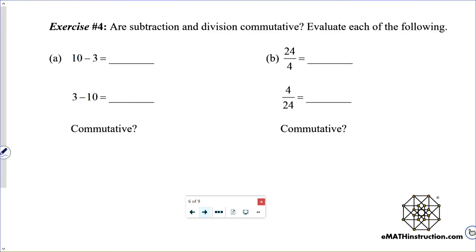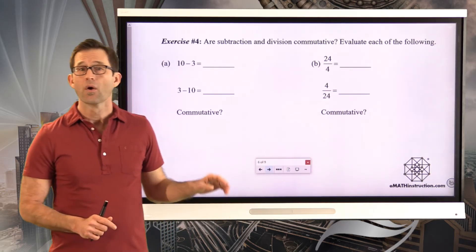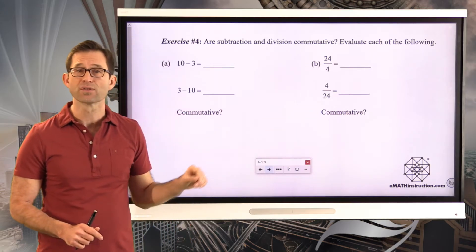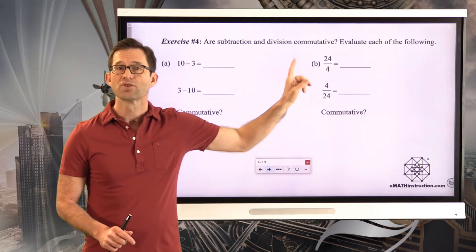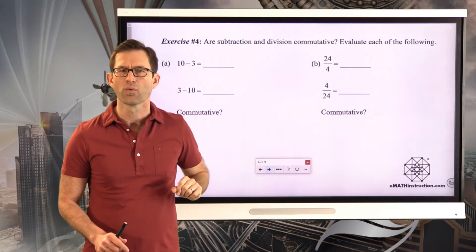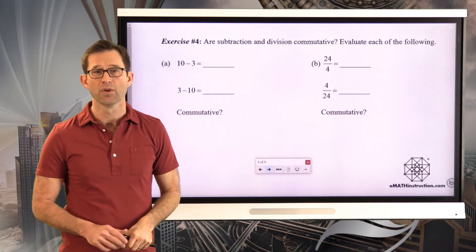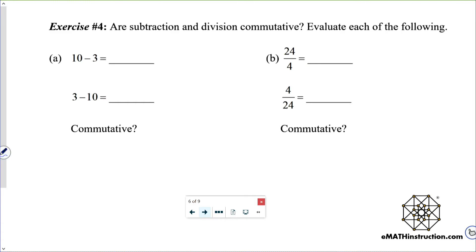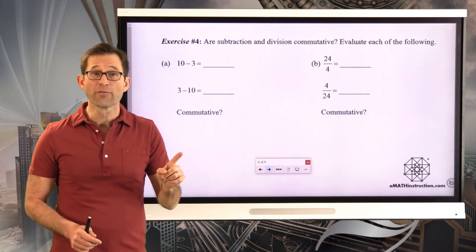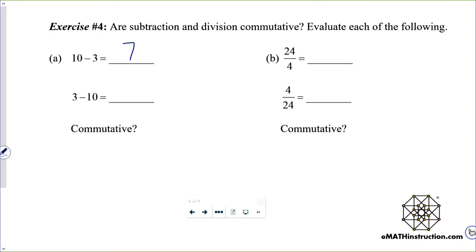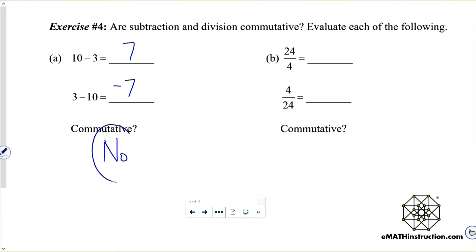Exercise 4: are subtraction and division commutative? We'll evaluate 10 minus 3 versus 3 minus 10, and 24 divided by 4 versus 4 divided by 24. As we learned in first grade, 10 minus 3 is equal to 7. But as we learned earlier this year, 3 minus 10 is the opposite: negative 7. So is subtraction commutative? Absolutely not. If I had 10 cookies and subtracted 3, I'd have 7. But if I'm at 3 degrees Fahrenheit and subtract 10 degrees, I'd be at negative 7 degrees.